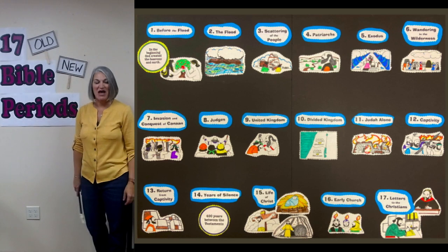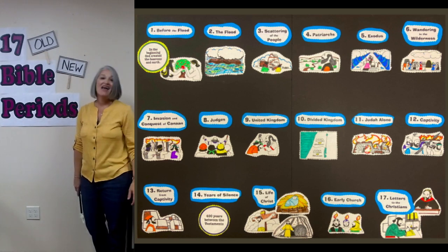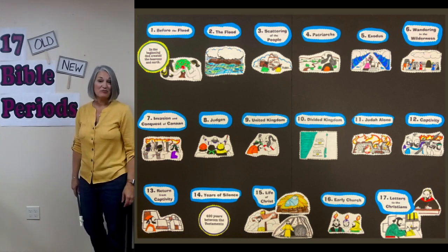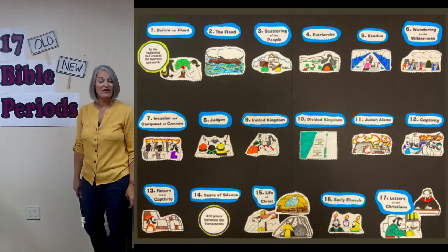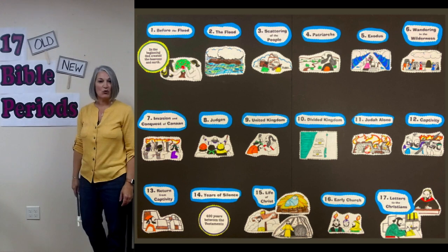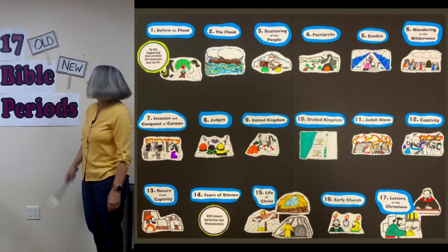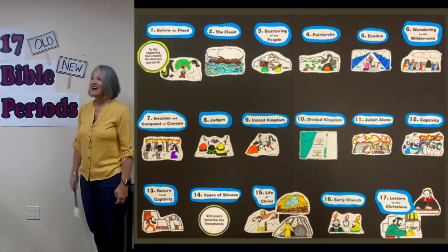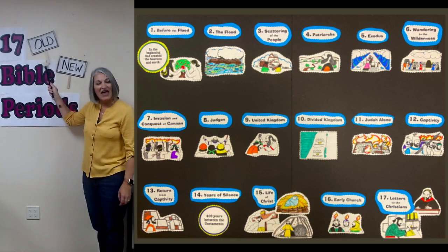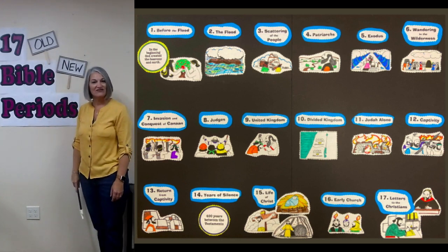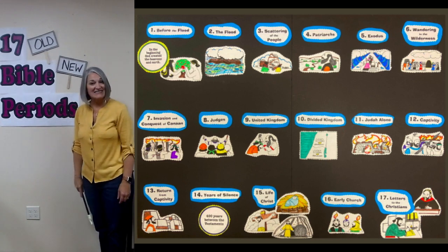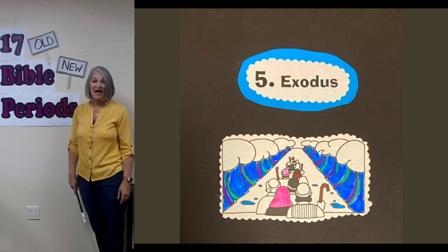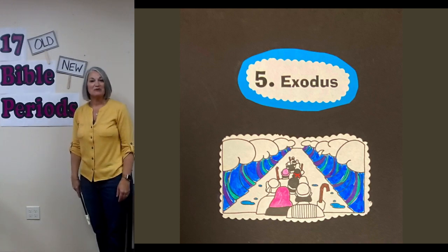It's time for our Bible events. Our first one today is about a baby boy named Moses whose mother saved his life by putting him in a basket in the river. He was found by the princess who raised him as her own. That Bible story is in the Old Testament, and it fits in the Exodus period. Moses is going to grow up and God is going to send him back to Egypt to bring God's people out.